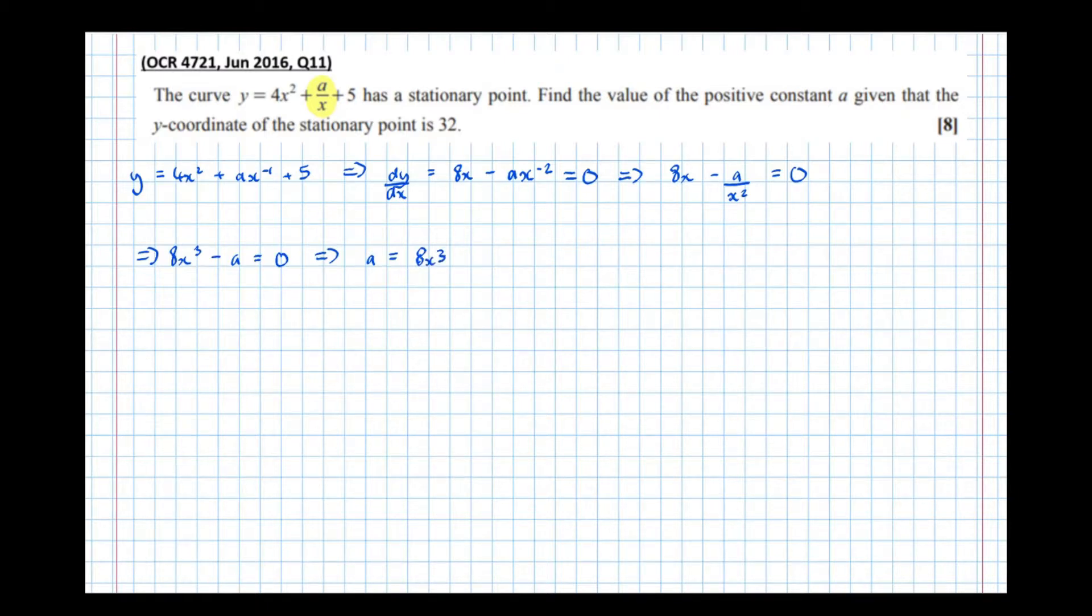So if the y coordinate is 32, and a at the stationary point is 8x³, I can sub those bits of information into the original equation. So that means that 32 = 4x² + a/x + 5.